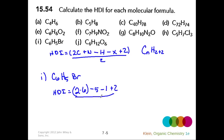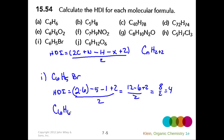Let's write our formula back up: HDI = (2×carbons + nitrogens − hydrogens − halogens + 2) / 2. And our formula for a saturated alkane is CₙH₂ₙ₊₂. Now let's do problem I, which has a halogen in it, to see how that affects our formula. The formula for this molecule is C6H5Br.